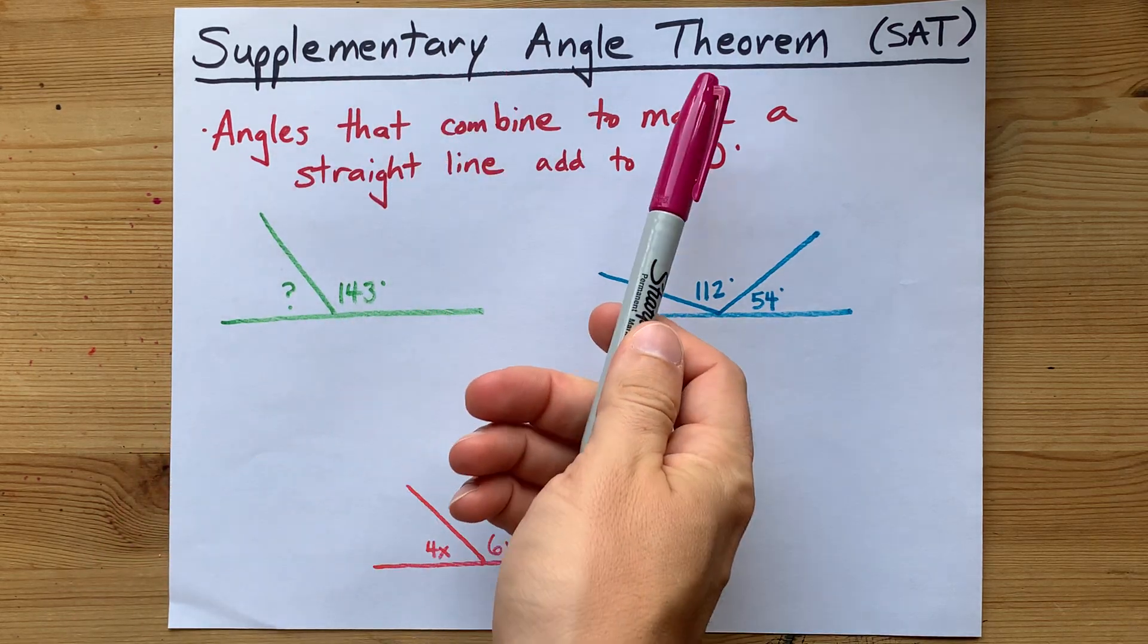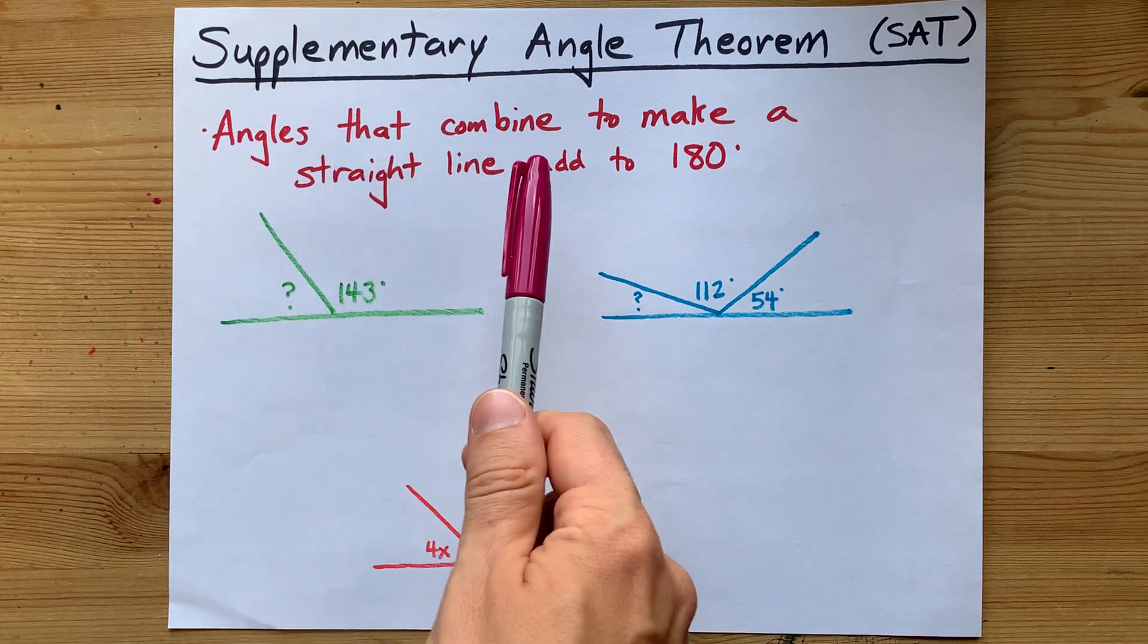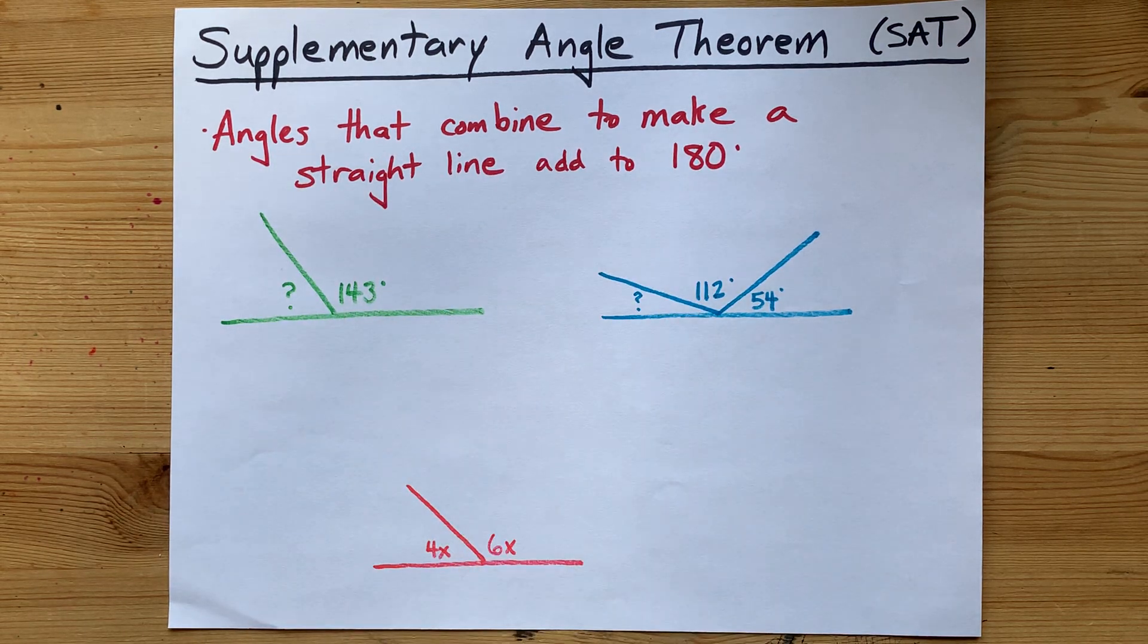The Supplementary Angle Theorem, or SAT, is the idea that angles that combine up to make a straight line will always add to 180 degrees.